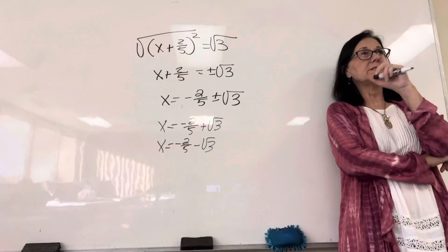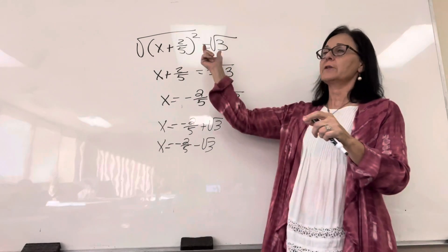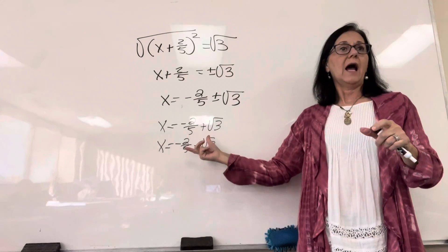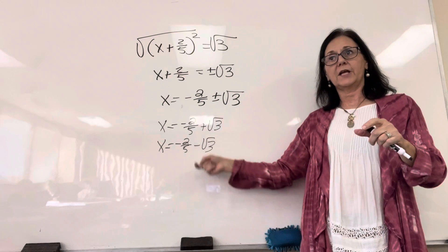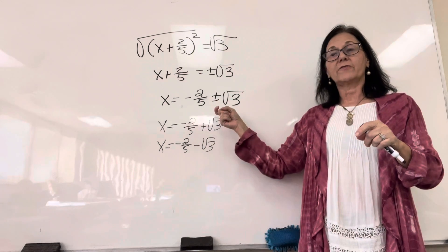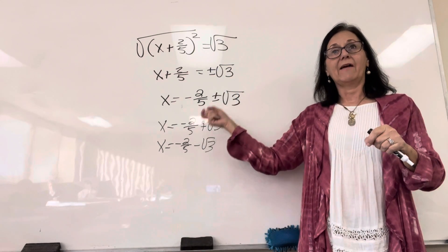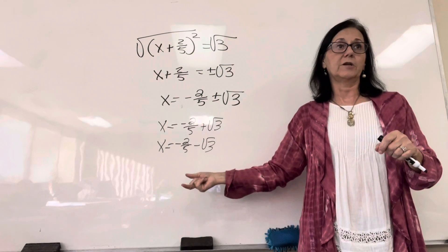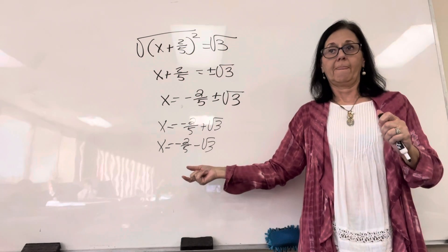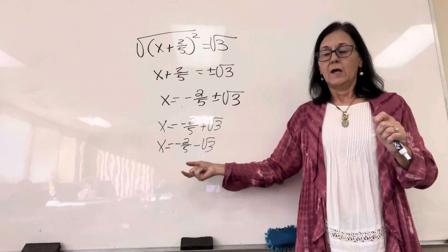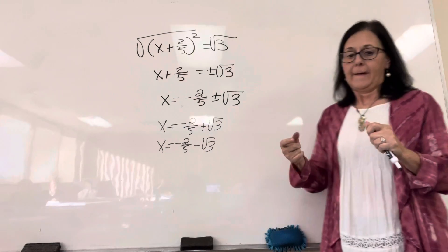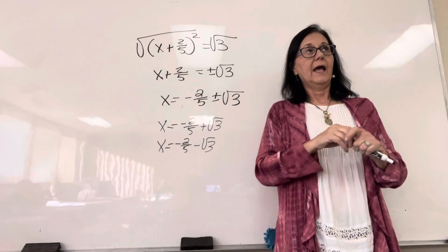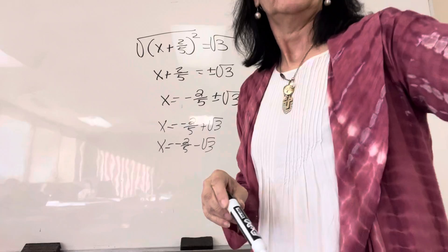Okay, here's one thing I want us to notice. When we have something squared equals a number, always our solutions are conjugates, right? The only thing that changes is the middle term. Okay, so that is going to be true every time. You have something squared equals a number, your solutions will always be conjugate terms. And when you... We'll stop there.